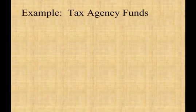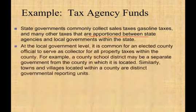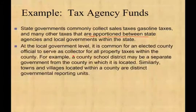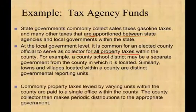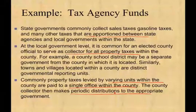Some additional examples: state governments commonly collect sales tax, gasoline, and many other taxes that are apportioned between state agencies and local governments. At the local level, it's common for an elected official to serve as a collector for all property taxes, and then distribute that money to the various districts. A third example: property taxes levied by varying units within a county are paid to a single office within the county, and the county collector makes periodic payments to the appropriate government.